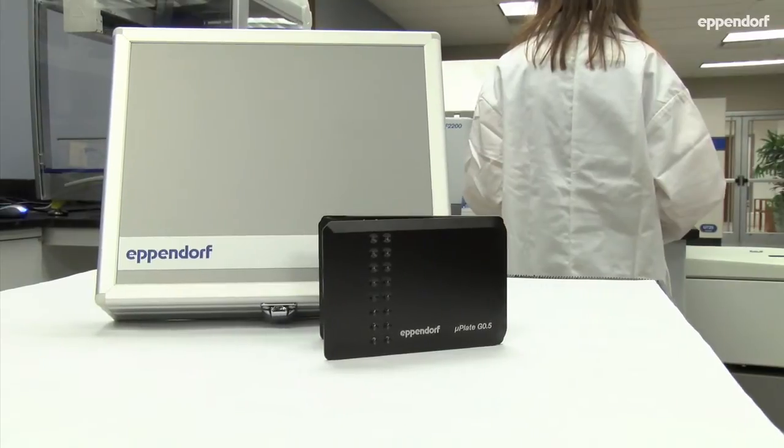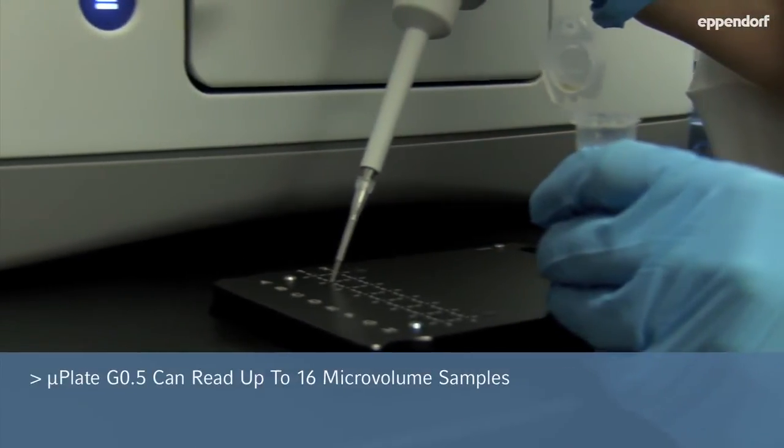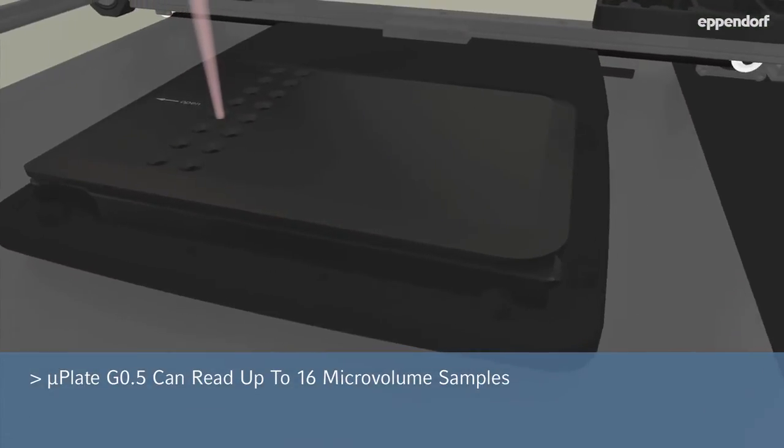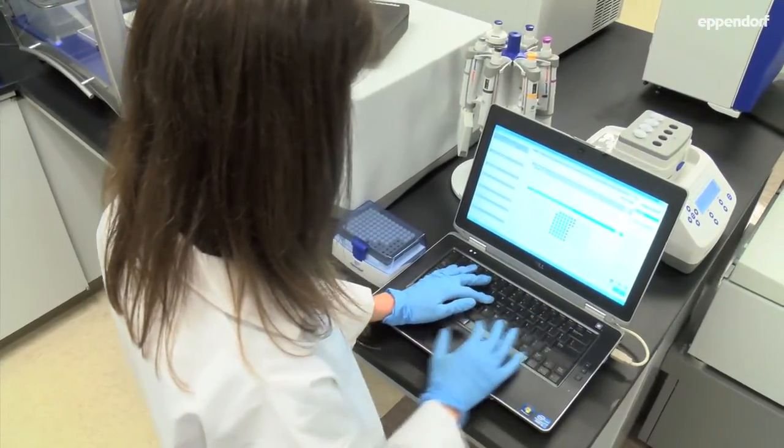The MicroPlate G0.5 offers an even greater range of applications, as up to 16 micro-volume samples can be read using the half-millimeter optical path, making high nucleic acid concentrations measurable with high reproducibility and without prior dilution.